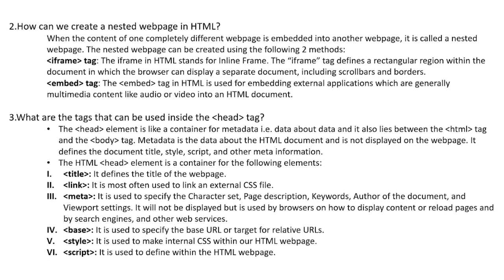Question 2: How can we create a nested web page in HTML? When the content of one completely different web page is embedded into another web page, it is called a nested web page. It can be created using the following two methods. The iframe tag — iframe in HTML stands for inline frame. The iframe tag defines a rectangular region within the document in which the browser can display a separate document, including scroll bars and borders. The embed tag in HTML is used for embedding external applications, which are generally multimedia content like audio or video, into an HTML document.